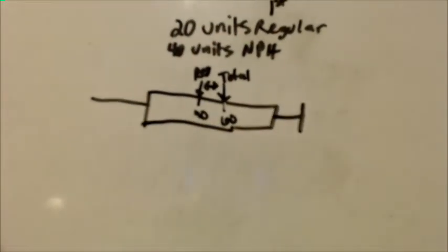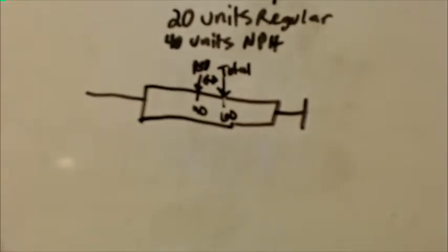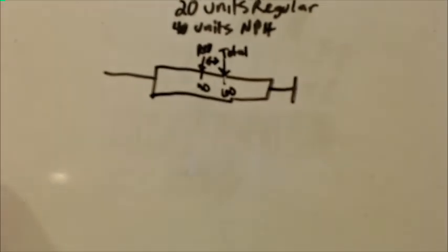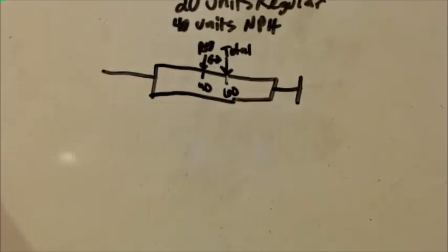In this instance, the total is 20 units plus 40 units, which is 60 units total. Then you're going to put a mark at 40 units, which is the difference between 60 and 20. That's where you make your marks. Hopefully that helps.